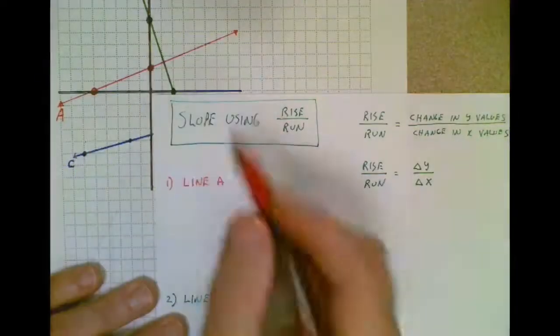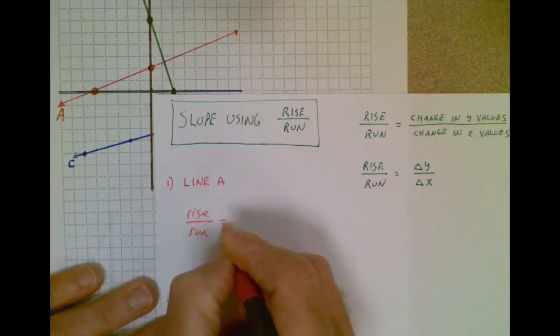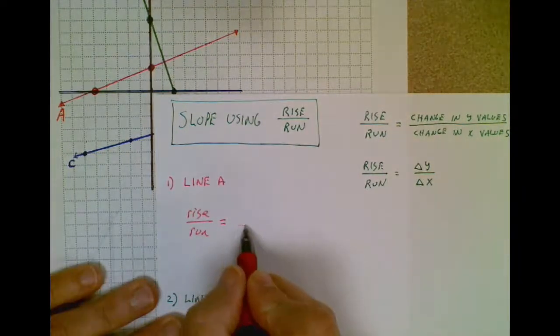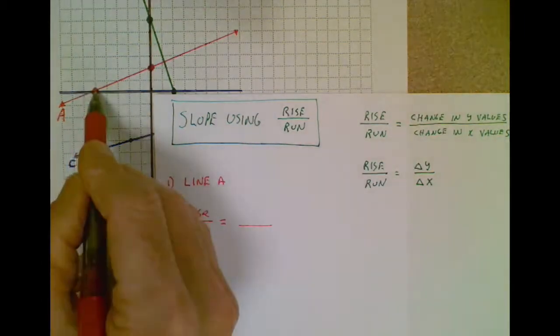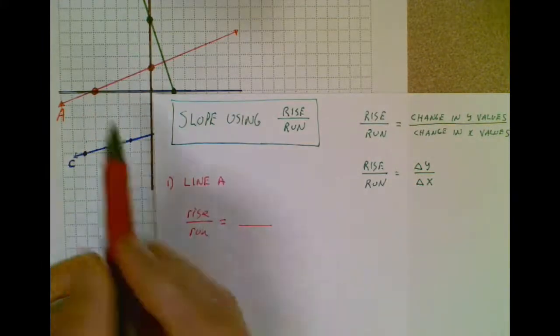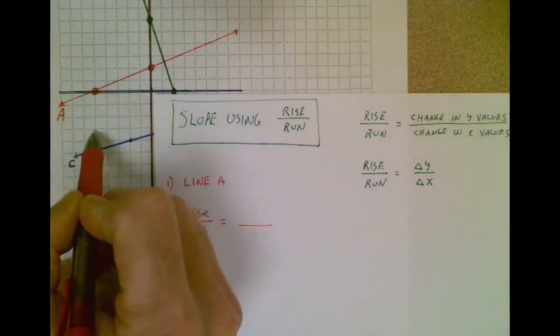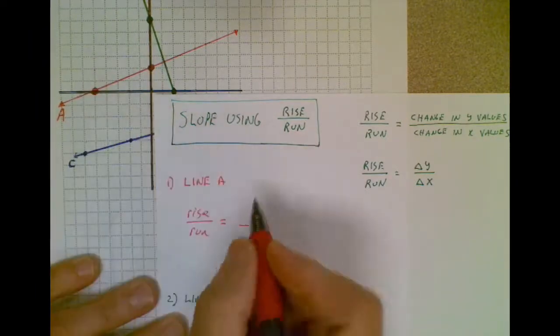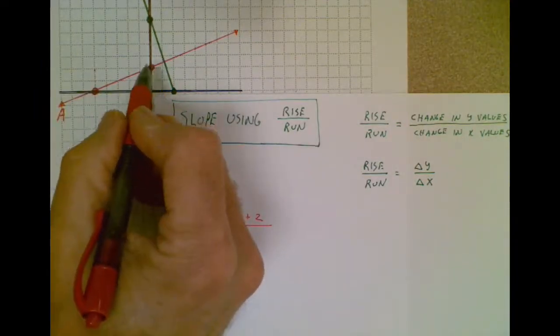So I'm looking at line A, the red line, and the very first thing I'm going to write on my paper is rise over run. Every time you're doing a slope calculation, that should be the very first thing you put on your paper. Now from here, you just choose a point that you would like to start at. I'm going to start at this point and travel towards this point. I'm going to count my rise. In other words, as I travel from here to here, how far up or down do I go? And to get there, I would have to go up two units.